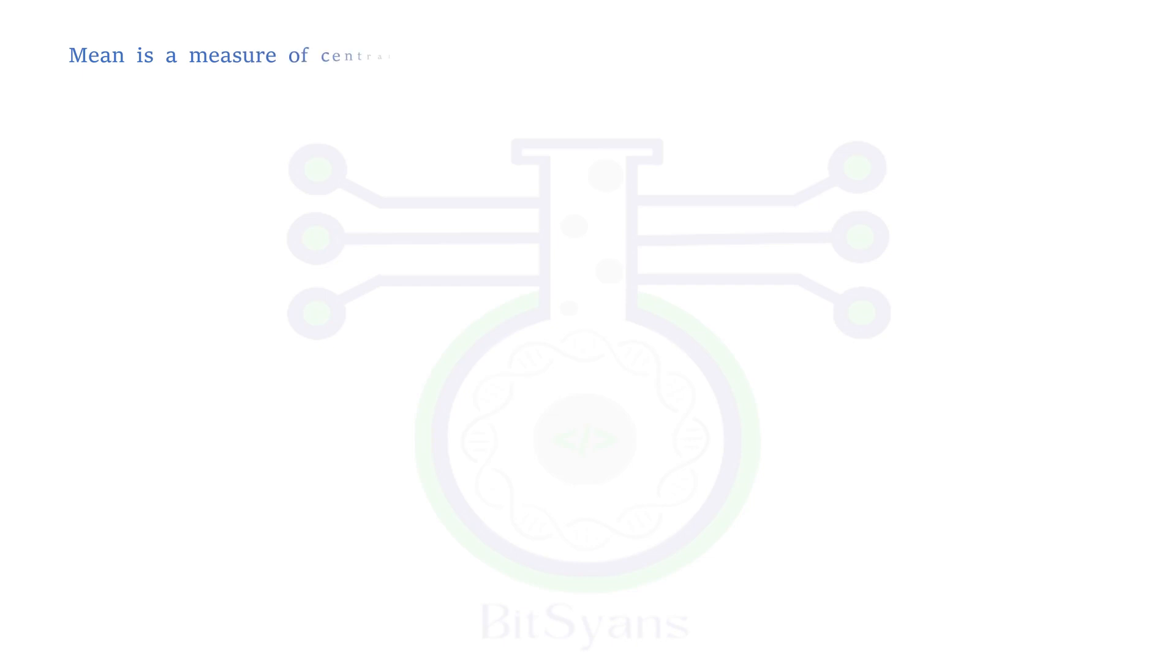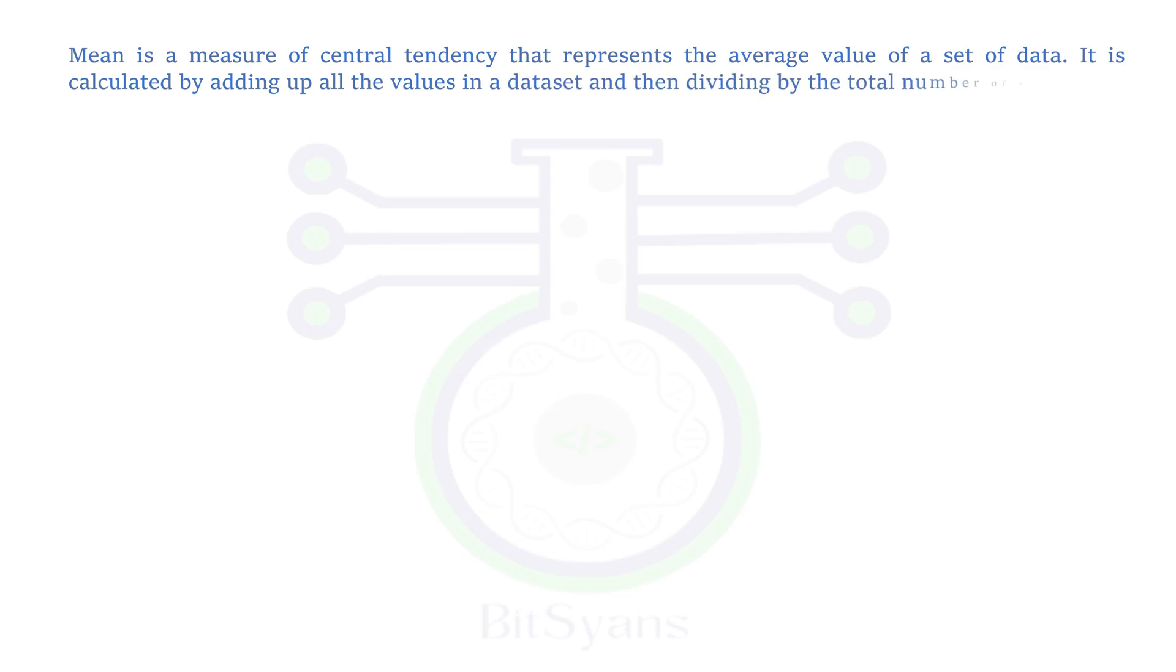Mean is a measure of central tendency that represents the average value of a data set. Mean is a measure of central tendency, refers to all those methods of statistical analysis which are used to estimate or calculate the average of a set of data. Now, let's talk about merits of mean.